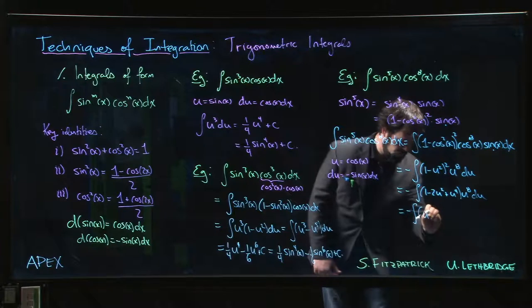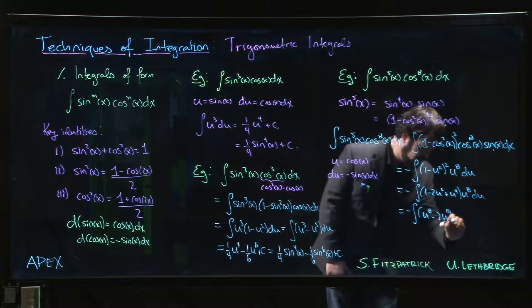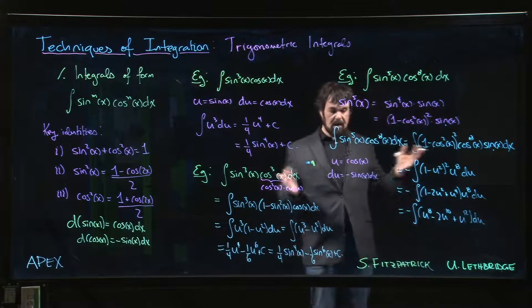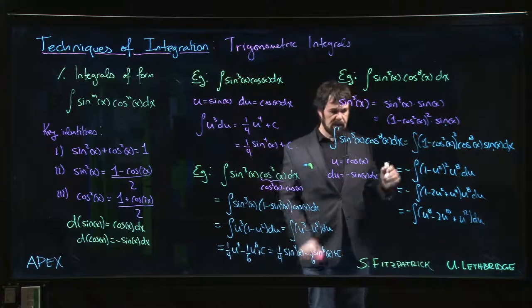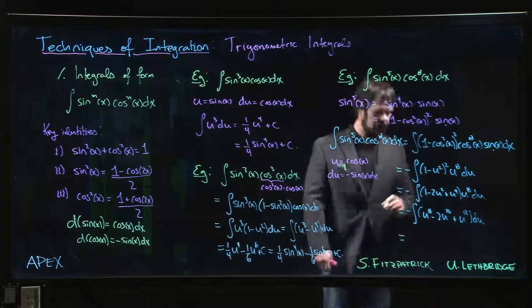So we have u⁸ - 2u¹⁰ + u¹². And now it's simple power rule integration of a polynomial, and I've only got room for one more line.